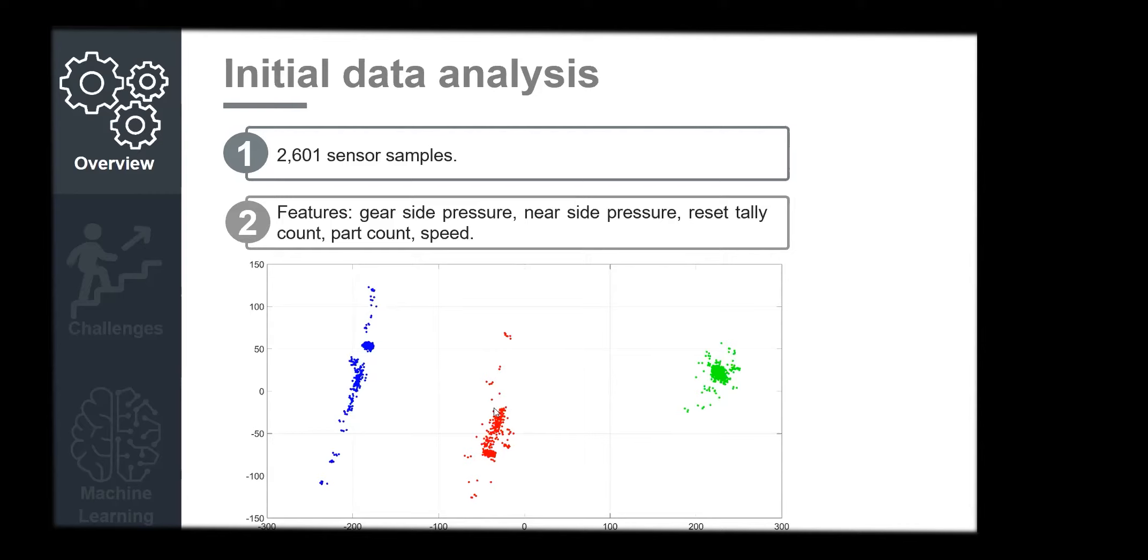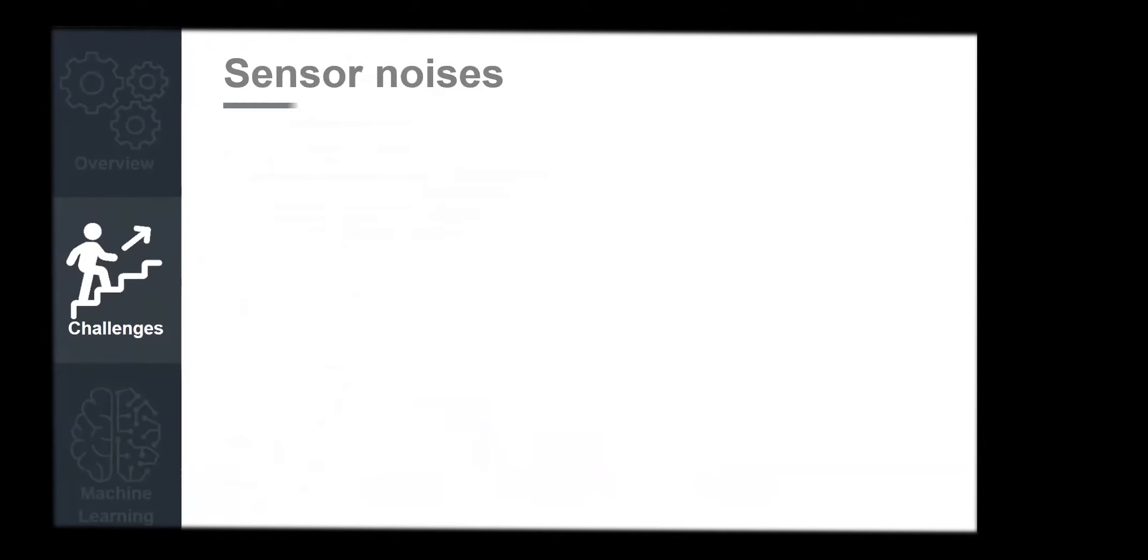As you can see here, we have used principal component analysis to map out the clusters. As you can see, there is a good separation of these clusters. These clusters are mapped out over a three day period. The data has been collected for over three days. There's a gap in between these three, which gives us a good foundation to build a prediction model for tool life prediction.